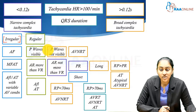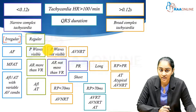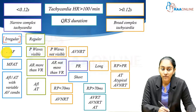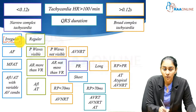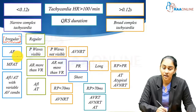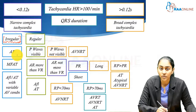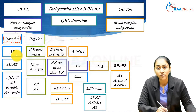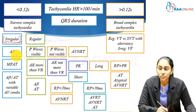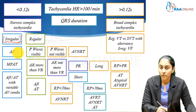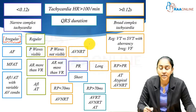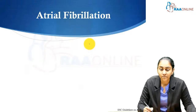This is essentially how you approach patients with narrow complex tachycardias, and whenever you have an irregular narrow complex tachycardia, atrial fibrillation is one of the first differentials that comes to mind. Broad complex tachycardia is almost always VT versus SVT with aberrancy.